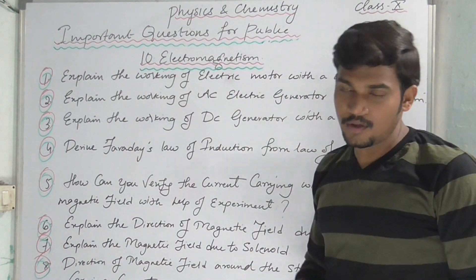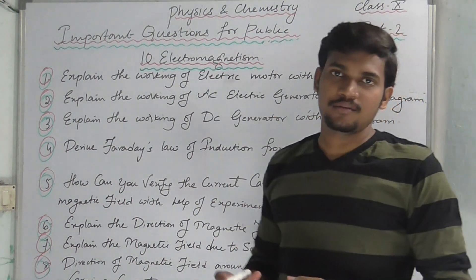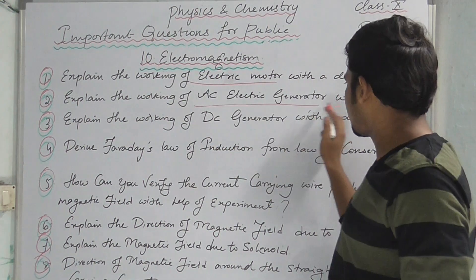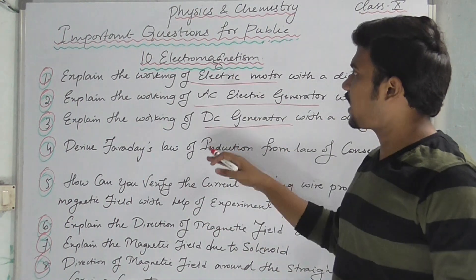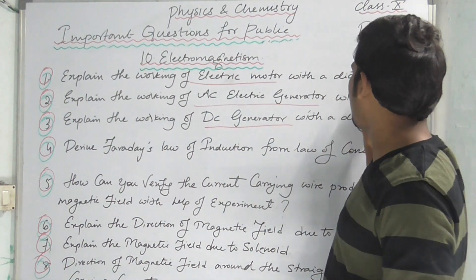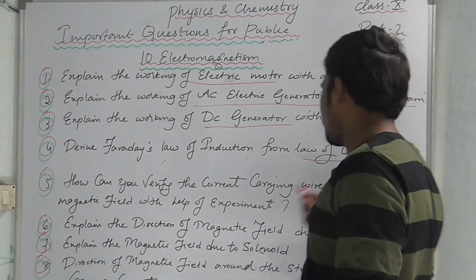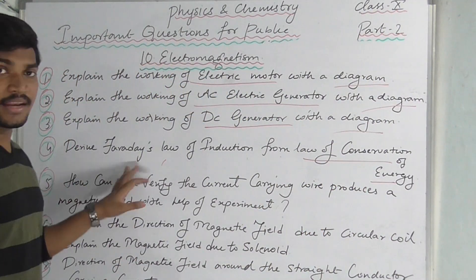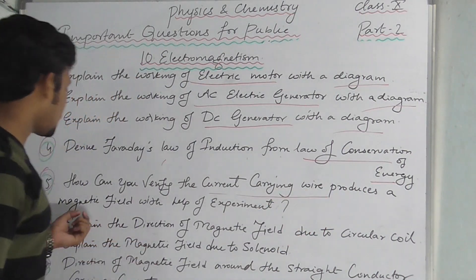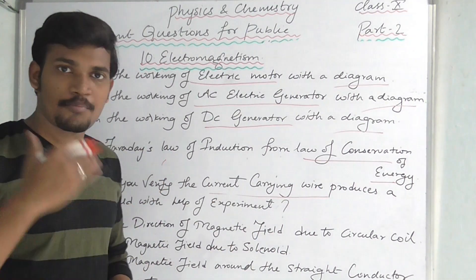The next important chapter is Electromagnetism. Explain the working of an electric motor with a diagram — you have to draw the diagram. Derive Faraday's Law of Induction from the law of conservation of energy — you have to draw the diagram for that as well. How can you verify that a current-carrying wire produces a magnetic field, with the help of an experiment?